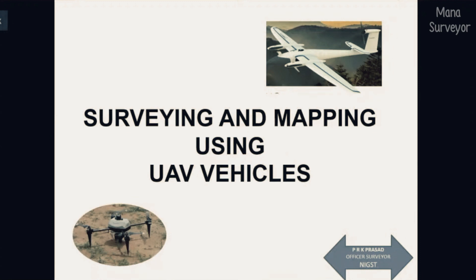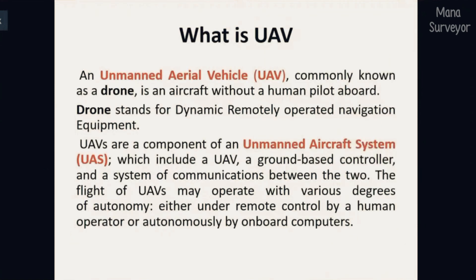What is UAV? An unmanned aerial vehicle, commonly known as a drone, is an aircraft without a human pilot. DRONE stands for Dynamic Remotely Operated Navigation Equipment. Normally a helicopter or aeroplane contains an onboard pilot, but a drone is remotely operated — there is no human pilot on board.